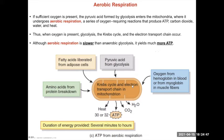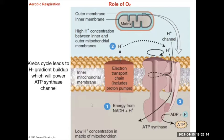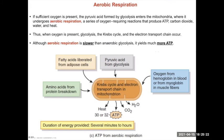What we really want to understand here is why oxygen is so important to this process. In the Krebs cycle, bonds in pyruvic acid are continuously broken down step by step, releasing a little energy at each step. Most importantly, we want to focus on the production of NADH molecules from this breakdown of glucose.